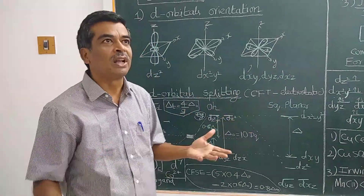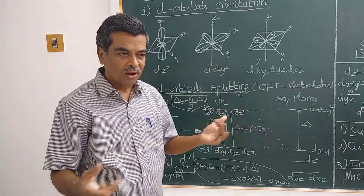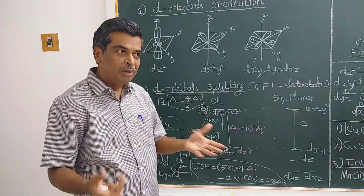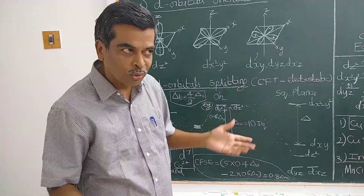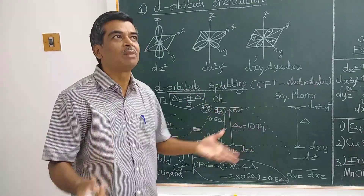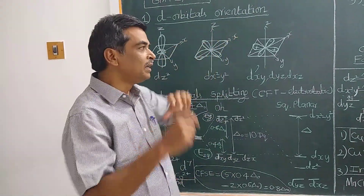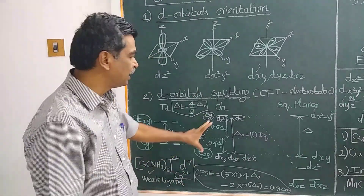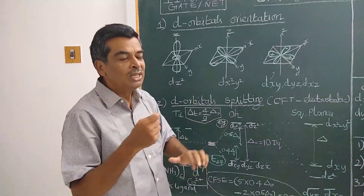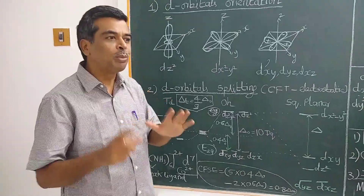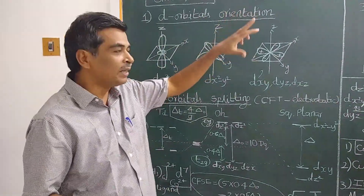Why are D-block elements very colorful? S-block elements are not colorful, but D-block elements are colorful because of D-orbitals and D-D transitions. This is explained by crystal field theory.